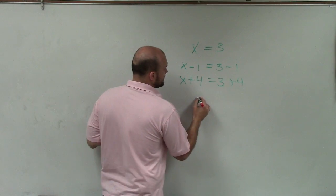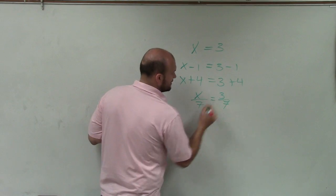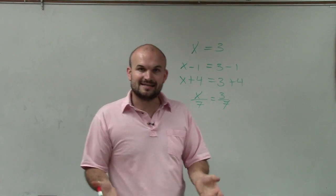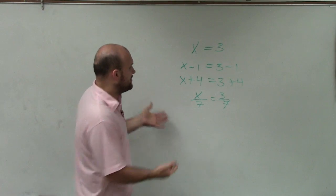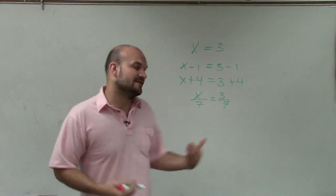And we can do anything. We can do x divided by 7 equals 3 divided by 7. Again, as long as we're applying the operation to both sides, and it's the same operation, then we produce equations that are still equal. They're just in different formats.